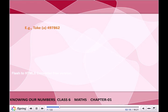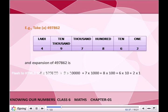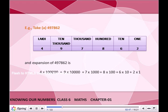Example: Take A. 497862. The place values are: 4 lakhs, 9 ten-thousands, 7 thousands, 8 hundreds, 6 tens, 2 ones. The expansion of 497862 is: 4 × 1 lakh + 9 × 10,000 + 7 × 1000 + 8 × 100 + 6 × 10 + 2 × 1.